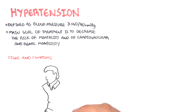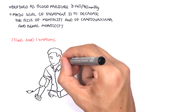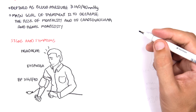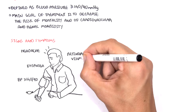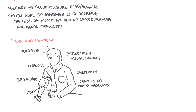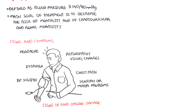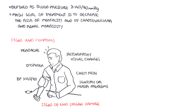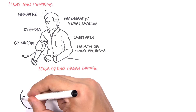The signs and symptoms of hypertension include headache, dyspnea, high blood pressure, possible retinopathy and visual changes, chest pain, and sensory or motor problems. There can also be signs of end-organ damage due to hypertension if the hypertension is untreated and severe. We will talk about end-organ damage towards the end of the video.